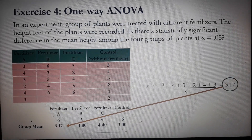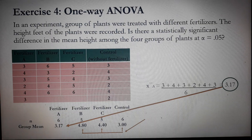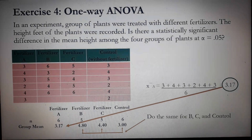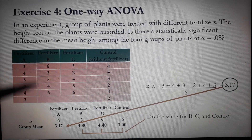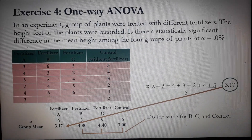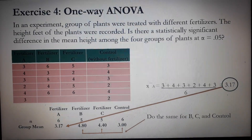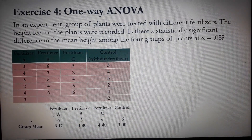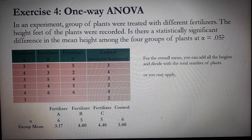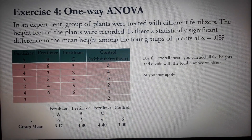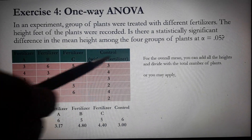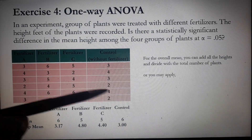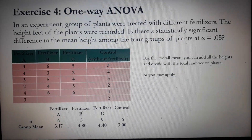The same procedure applies for B, C, and control. For B, for example, you add all the heights divided by 5. Next, we need to find the overall mean. You can simply add all the heights divided by 22, which is the total number of plants.